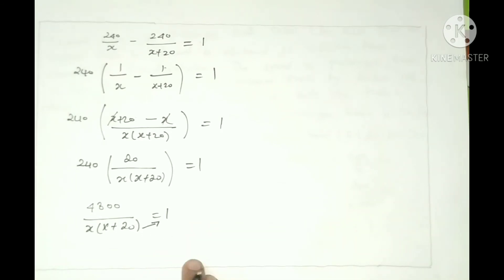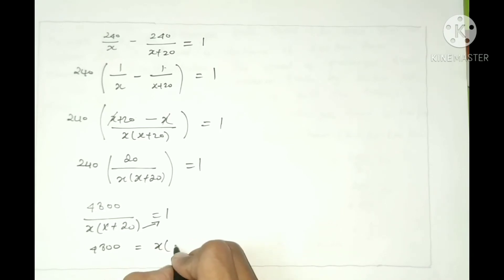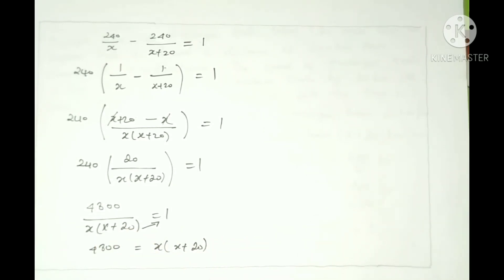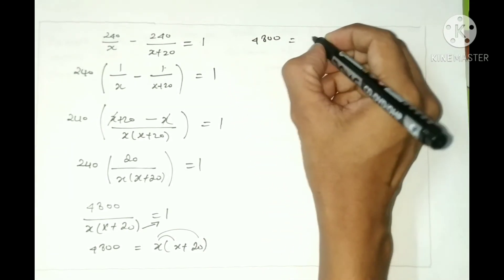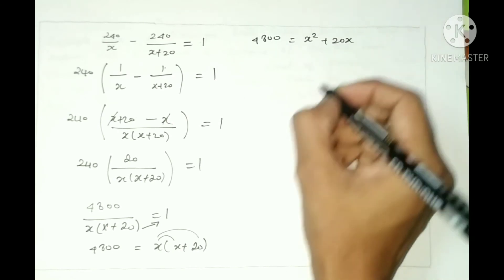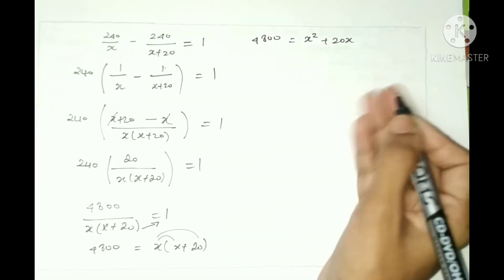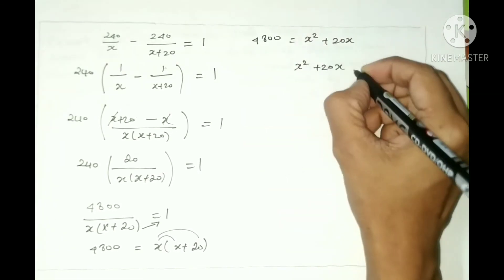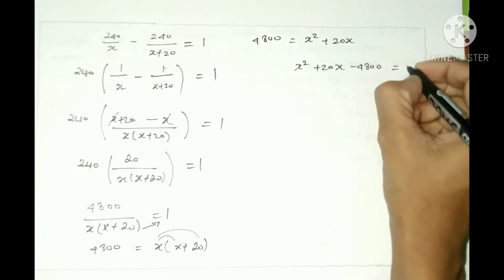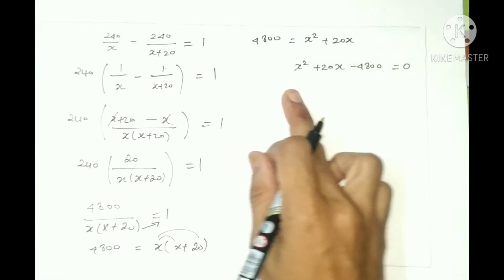After cross multiplication, 4800 equals x into x plus 20. Rearranging, this gives x squared plus 20x. So we get x squared plus 20x minus 4800 equals 0. This is a quadratic equation.